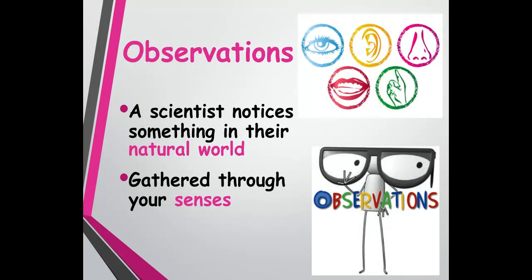What is an observation? It's anything that someone notices about the natural world — anything around you. That's usually gathered through your five senses: you see something you want to explain, hear it, touch it, taste it, or smell it. You're really using the scientific method every single day. Anytime you make decisions or ask questions you just probably don't call it that. Any observation is just being in the world and noticing the things around you.